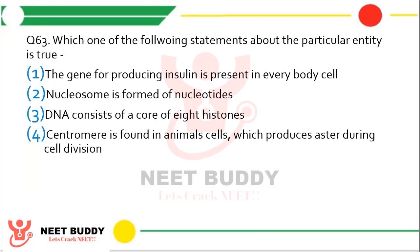Question number 63. Which one of the following statements is true? 1. The gene for producing insulin is present in every body cell. 2. Nucleosome is formed of nucleotides. 3. DNA consists of a core of 8 histones. 4. Centromere is formed in animal cells which produces asters during cell division. The correct answer is option 1 — the gene for producing insulin is present in every body cell.